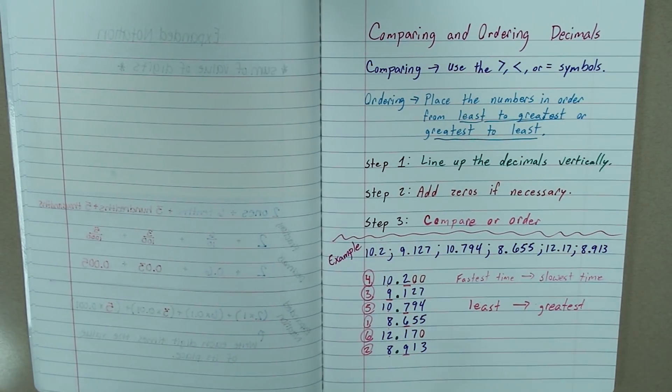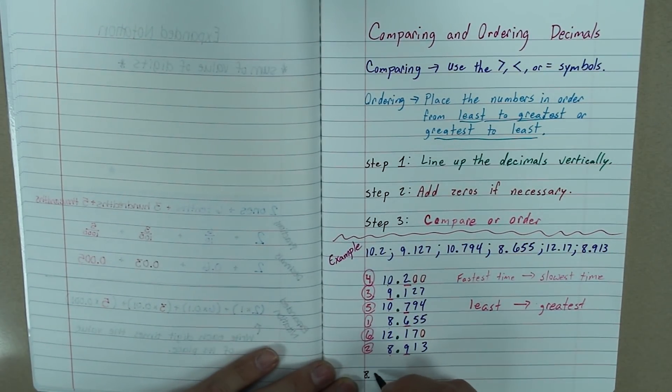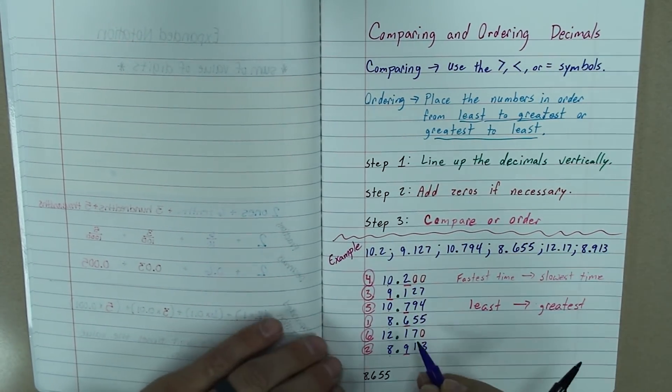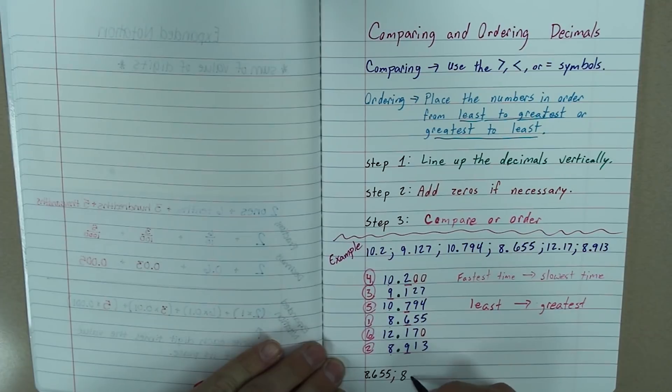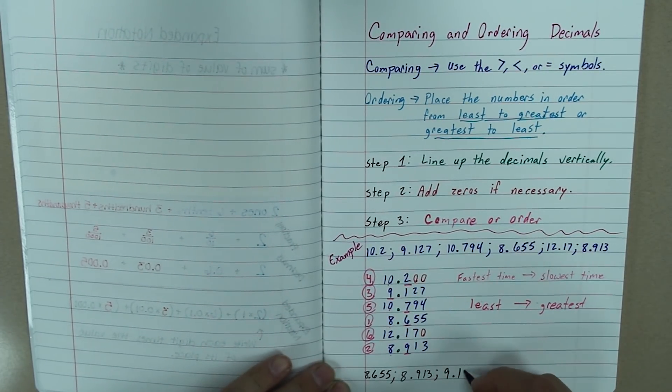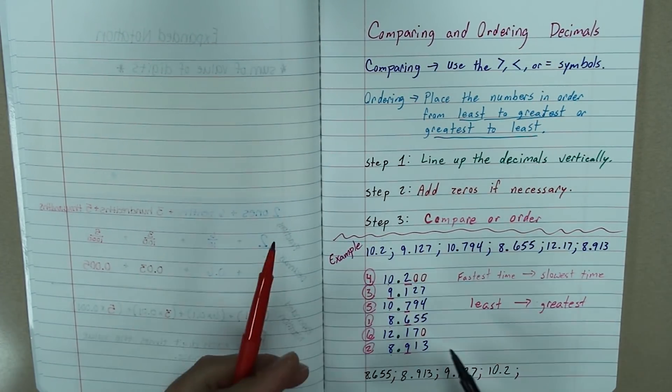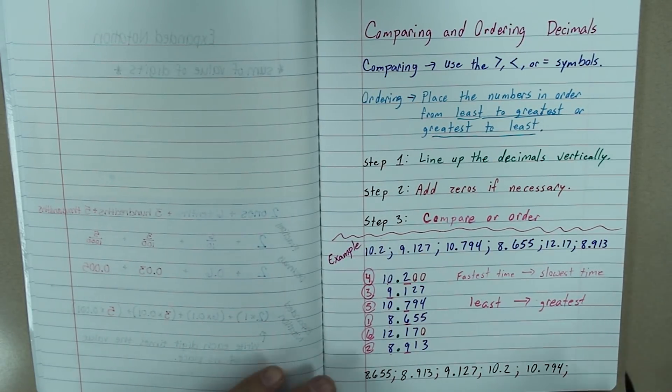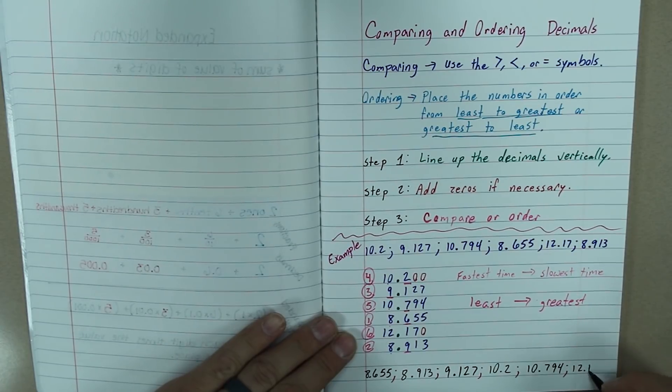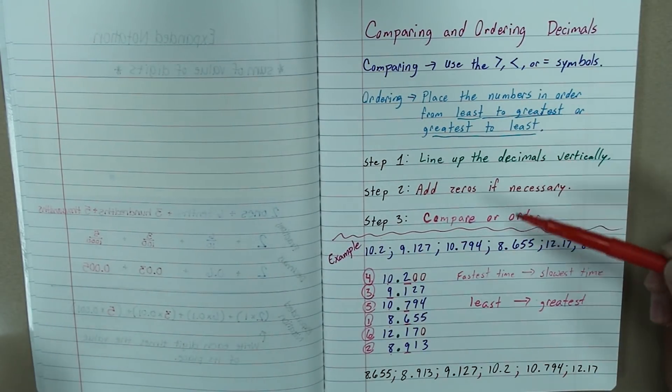So, now we have ordered them from least to greatest. The last thing we want to do is write it out. So, this is how we order them from least to greatest or fastest time to slowest time, using these steps here.